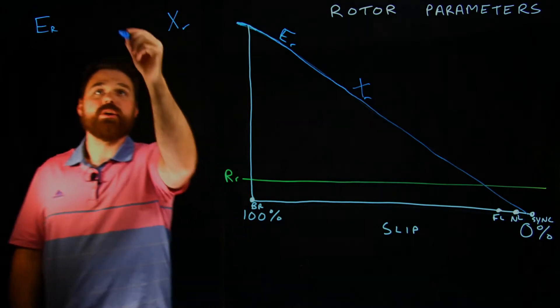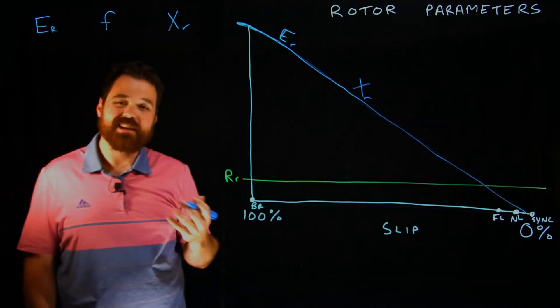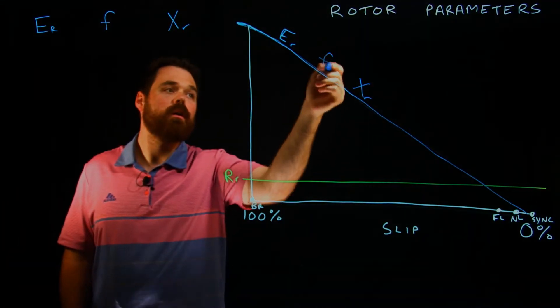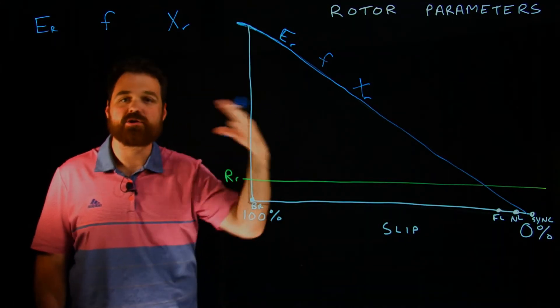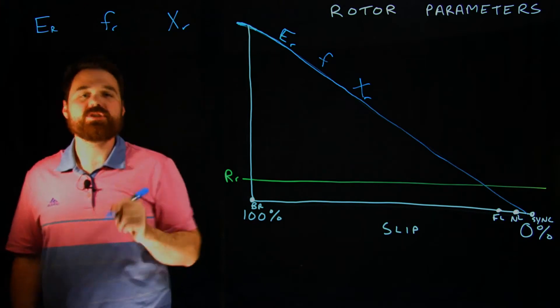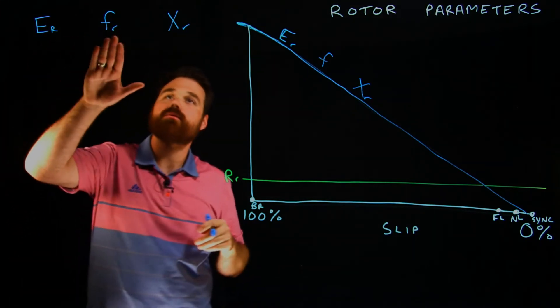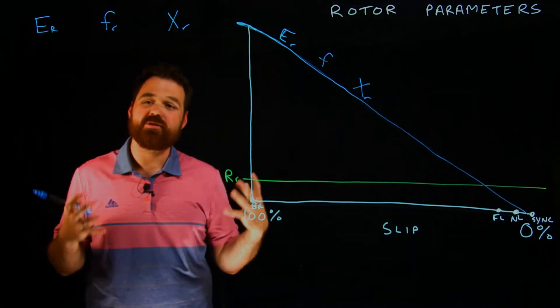Reactance of the rotor. We are going to have a frequency induced inside that rotor as well, a sine wave being produced because of the interaction going around. Now, these three values, my voltage, frequency and reactance, we all consider directly proportional.